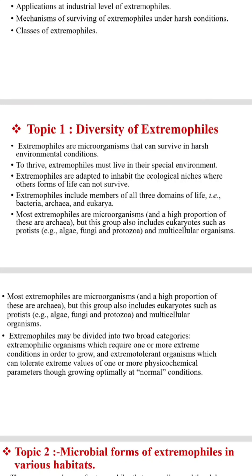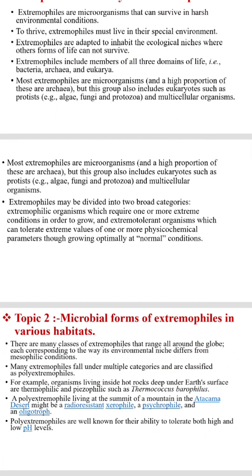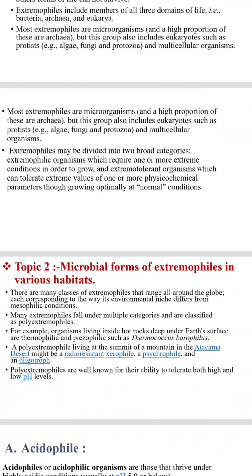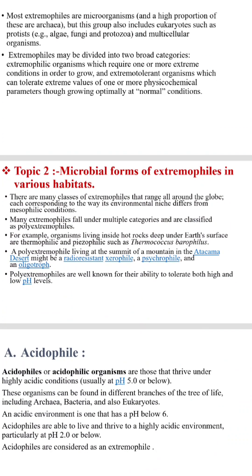Most extremophiles may be divided into two broad categories: extremophilic organisms, which require one or more extreme conditions in order to grow, and extremo-tolerant organisms, which can tolerate extreme values of one or more physiochemical parameters while growing optimally under normal conditions. There are many classes of extremophiles that range all around the globe, each corresponding to the way its environmental niche differs from mesophilic conditions.